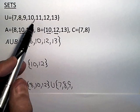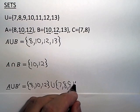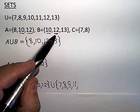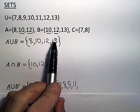10 is in B so it doesn't go in. 11 is in the universal set but is not in B. So 11 pops in. 12 is in B so it doesn't go in. And 13 is in B so it doesn't go in.